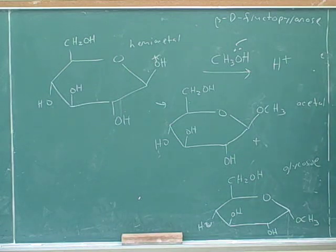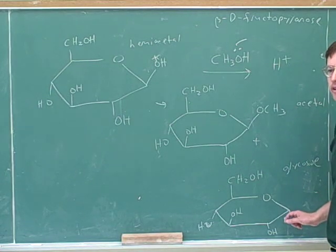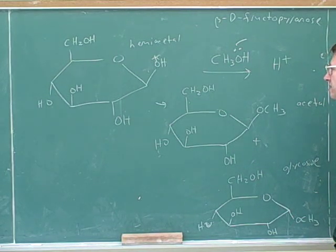And of course, whenever we do this, we end up with a mixture of products, because we're going through a trigonal planar carbocation intermediate. All right, so that's how we make glycosides.